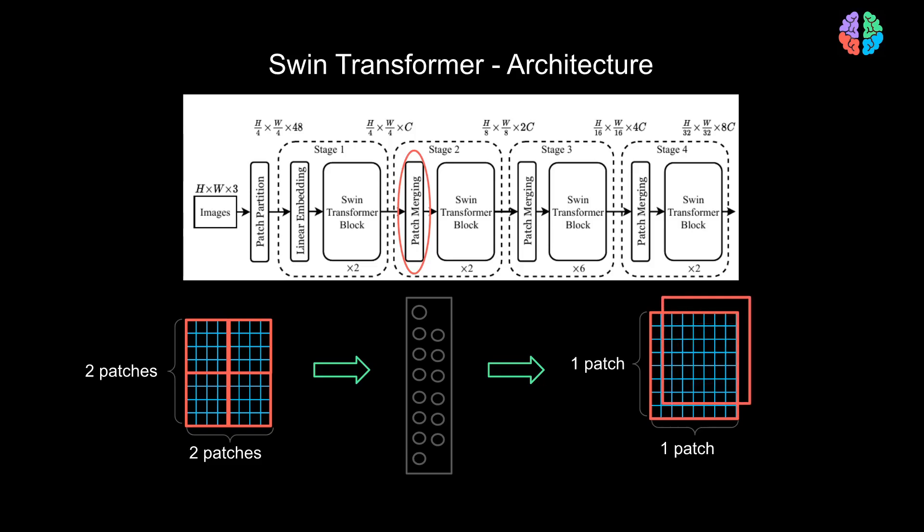In our example, we initially took C to be 96. Going by that, at this stage, C will be twice that. This will be the output of stage 2 of the Swin Transformer network.